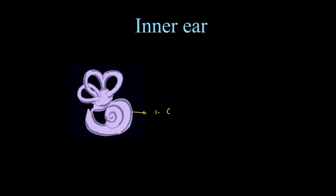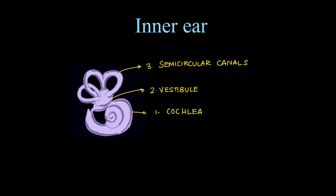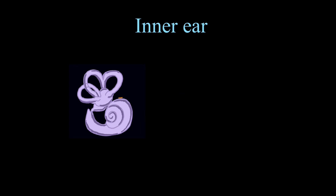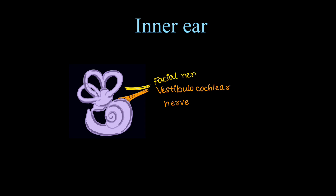Moving on to the inner ear, it has three parts: the cochlea — the rounded portion; the vestibule — the bulbous part; and three semicircular canals. We will see all these structures on axial HRCT images. These portions are very neatly seen; we can also see the vestibulocochlear nerve along with the facial nerve forming the 7-8 nerve complex.